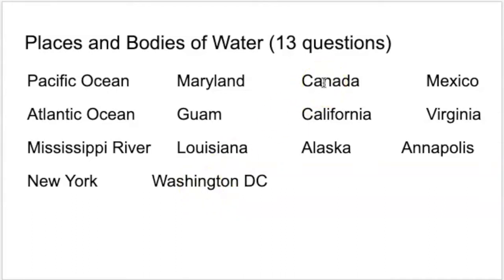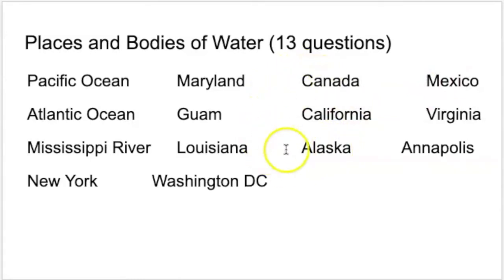Washington, D.C. is the nation's capital. Canada sits on our border to the north. Mexico sits on our border to the south. California is on the border of Mexico — it's a state. Alaska is on the border of Canada, and it's the largest state. And Annapolis is the capital of your state, Maryland. I hope this helps.